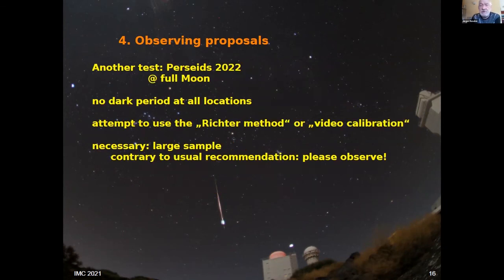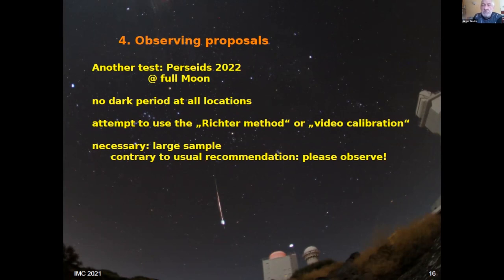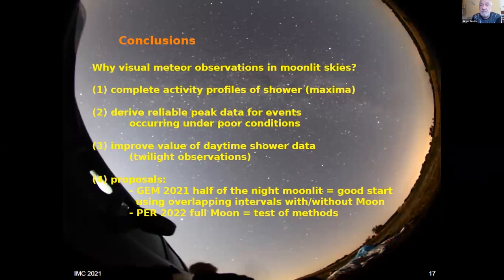Another proposal — not as ideal at first — is the Perseids next year, which occur right at full moon, so there's no dark period for an undisturbed sample. But we can use the other methods I mentioned, and it will be necessary to have a large sample. Contrary to the usual guidelines we give for visual observations, please also use the nights with full moon or moonlight just to deliver data for this project. The data goes into the VMDB as usual observations, so nothing special is needed.